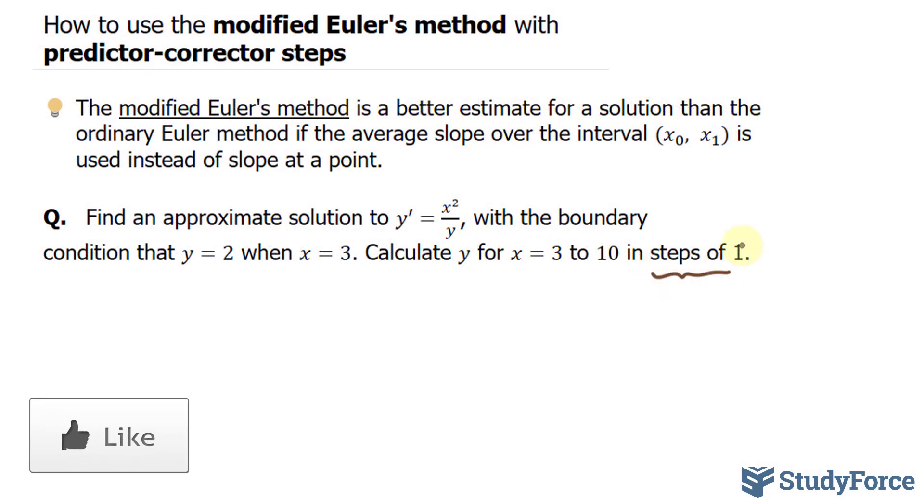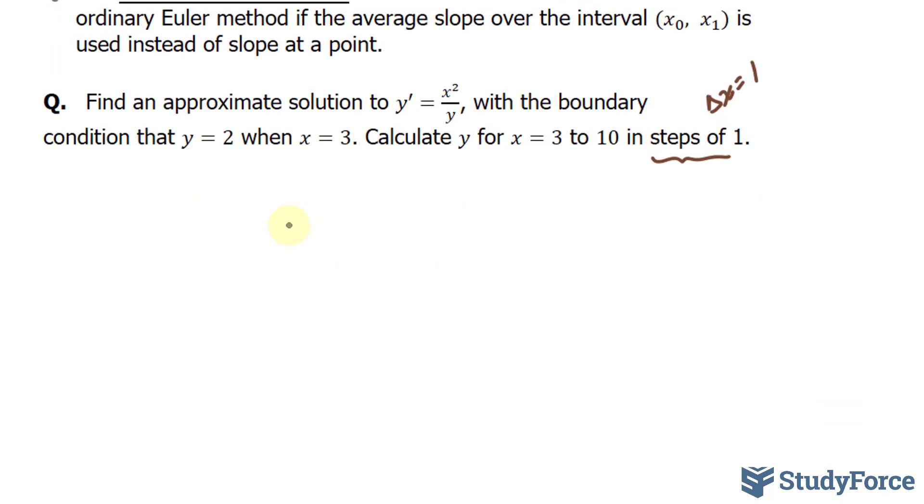This part suggests that Δx = 1 and we'll use that as we come up with our solution. The first thing I want to do is find out what the slope is at the point x = 3 and y = 2. We have y' equal to our first slope, which is 3² = 9 over 2, which gives us a slope of 4.5.